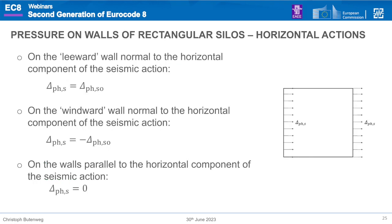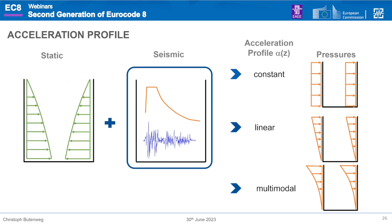For rectangular silos in the horizontal direction, we consider the leeward and windward sides, applying the previously calculated pressure. On walls parallel to the horizontal component of the seismic action, no additional load is necessary because the full seismic action activates the content in the direction of the action. The vertical component also needs to be considered.